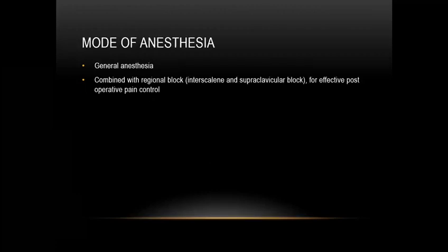The mode of anesthesia for shoulder arthroscopy is general anesthesia, combined with regional block — interscalene and also supraclavicular — mainly for post-operative pain control.